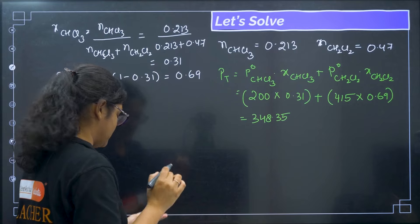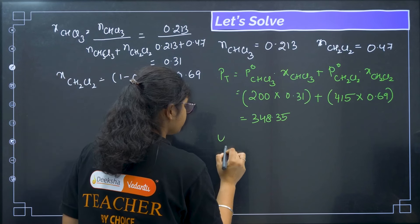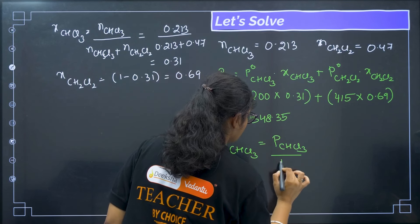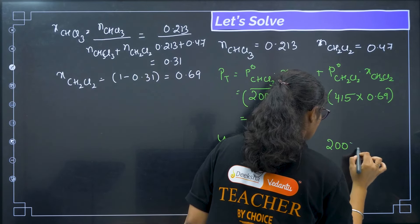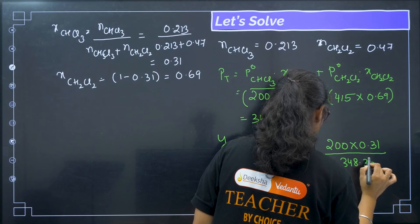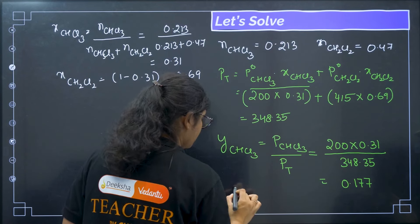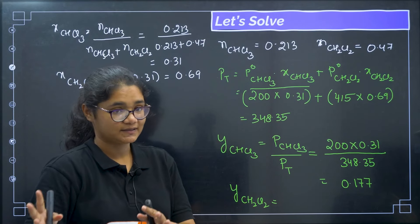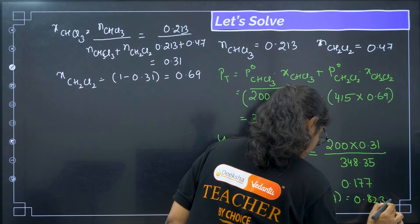The question also asks for the mole fraction of each component in the vapor phase. Y(CHCl3) = P(CHCl3) / P_total = (200 × 0.31) / 348.35 ≈ 0.177. Then Y(CH2Cl2) = 1 − 0.177 = 0.823. So the answers are: total pressure ≈ 348.35 mmHg, Y(CHCl3) ≈ 0.177, Y(CH2Cl2) ≈ 0.823.